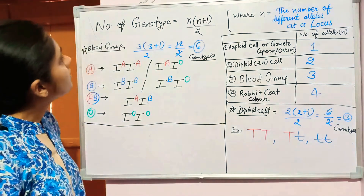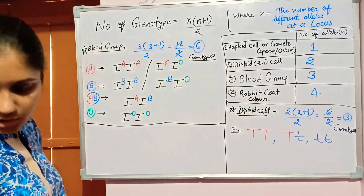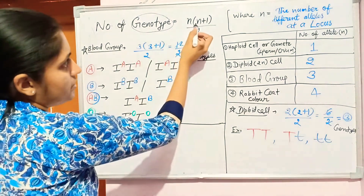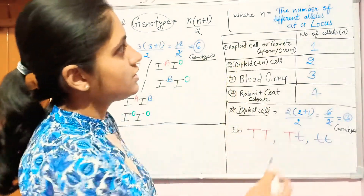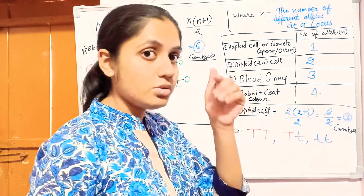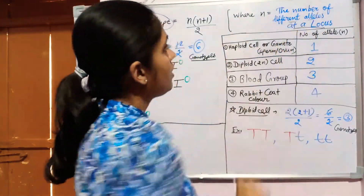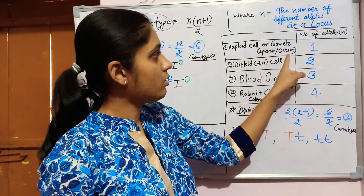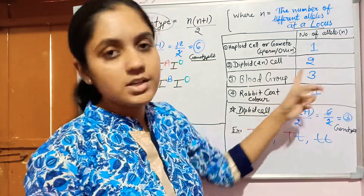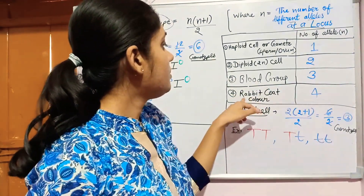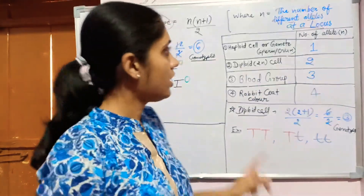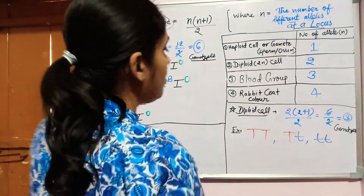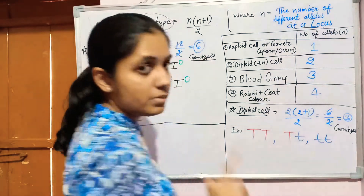Here is a formula to directly find the number of genotypes in a short time: number of genotypes = n(n+1)/2, where n is the number of different alleles at a locus. For a haploid cell or gamete, n = 1; for a diploid cell, n = 2; for blood group with three alleles, n = 3; and rabbit coat color has four alleles at the same locus, so n = 4.